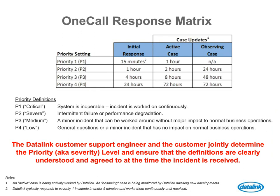So our response matrix — how we respond and what our SLAs are — is on the screen now. We have priority level definitions: P1, P2, P3, P4. Those definitions are what our engineers work towards when determining what the priority should be when you open a case. This is very important with respect to the success of your case and how the case is managed. You'll see the initial response in the grid as well as the active case updates and observing case updates there by priority. It's really important that when you open a case with Datalink, you set the priority and work with the engineer to jointly determine that severity or priority, so that you're getting the best response and updates when you expect them.